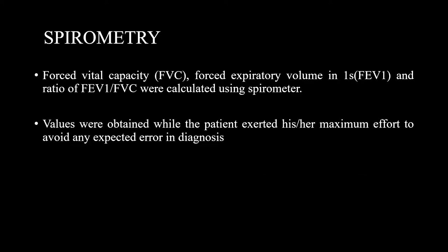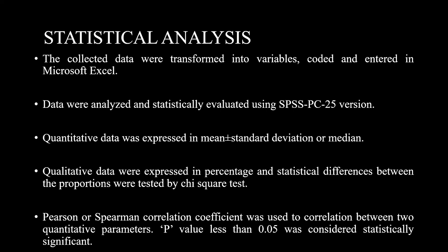Forced vital capacity, forced expiratory volume in the first second, and the ratio of FEV1 over FVC were calculated using a spirometer. Values were obtained while the patient exerted maximum effort to avoid any expected error in the diagnosis. The data collected were statistically evaluated using SPSS version 25. Quantitative data were expressed as mean and standard deviation, while qualitative data were expressed in percentages. Pearson or Spearman correlation coefficient was used to correlate between quantitative parameters, and a p-value of less than 0.05 was considered statistically significant.